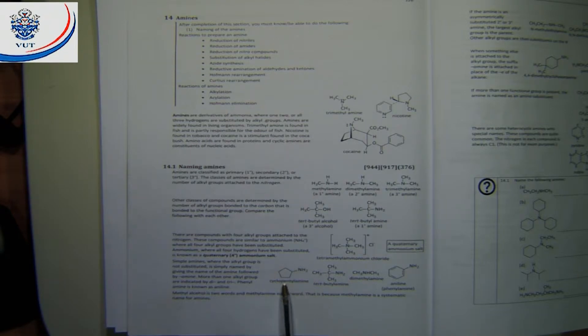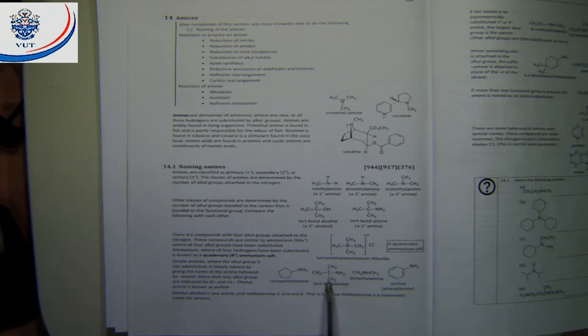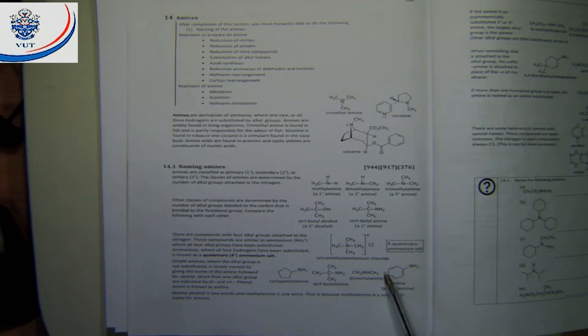If you take something like cyclopentyl with an NH₂, you get cyclopentylamine. Or the tert-butyl group gives tert-butylamine. Dimethylamine. And then aniline, which you know very well. So that's the way to go when you name them.